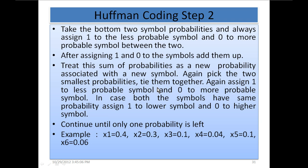Step 2: Take the bottom two symbol probabilities and always assign 1 to the less probable symbol and 0 to the more probable symbol. After assigning 1 and 0, add them up and treat this sum as a new probability associated with a new symbol. Again pick the two smallest probabilities, tie them together, assign 1 to the less probable and 0 to the more probable. If equal, assign 1 to the lower symbol and 0 to the upper. Continue until only one probability is left.